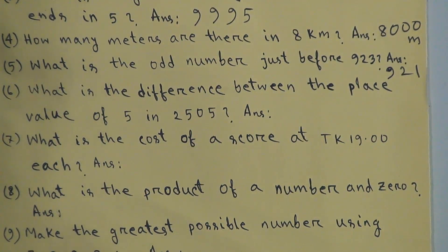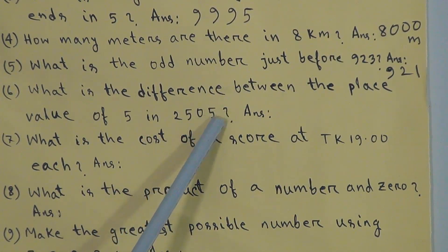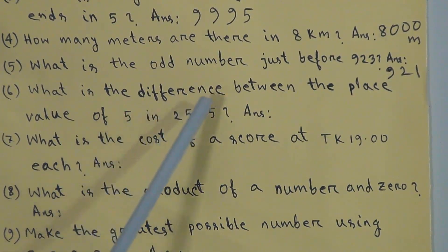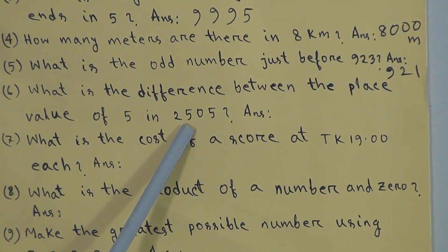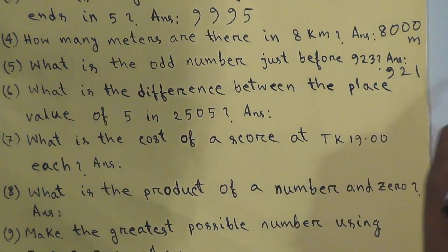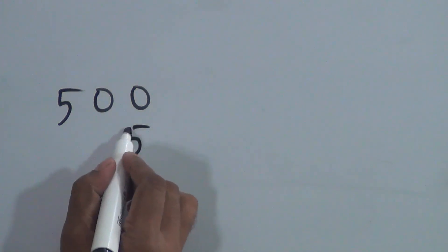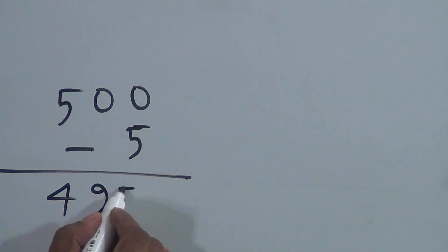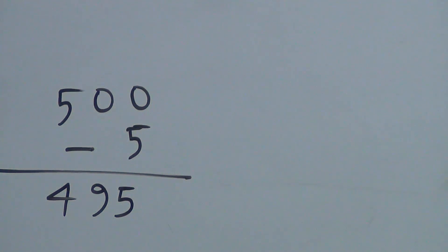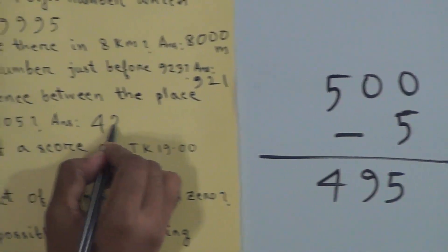Question 6: what is the difference between the place values of 5 in 2505? There are two 5s — one in the hundreds place and one in the ones place. The place value of 5 in hundreds place is 500, and in ones place is 5. The difference is 500 − 5 = 495. The answer is 495.